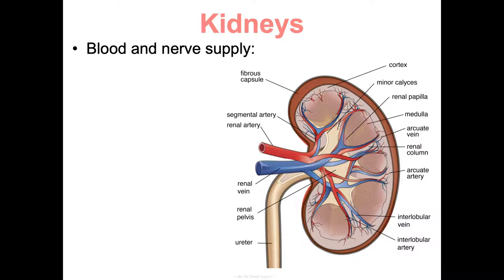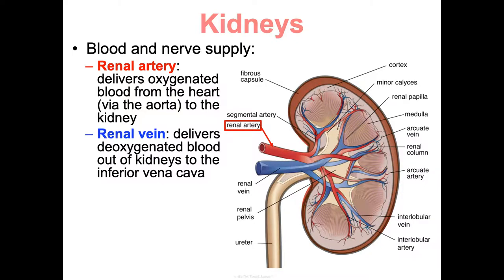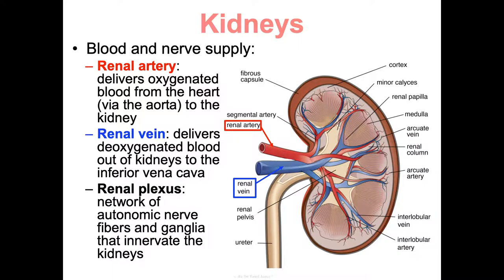The kidney's blood and nerve supply: the renal artery delivers oxygenated blood from the heart via the aorta to the kidney. The renal vein takes deoxygenated but filtered blood out of the kidneys to the inferior vena cava, which brings it back to the heart. The renal plexus refers to the network of autonomic nerve fibers and ganglia innervating the kidney.